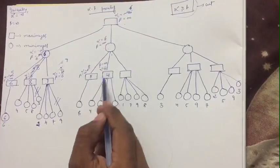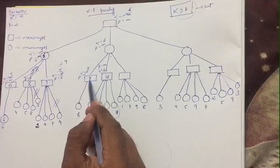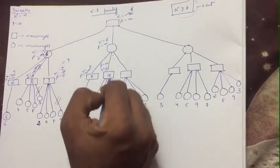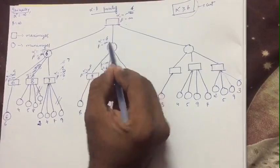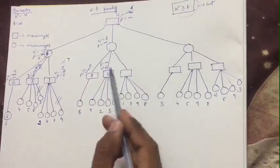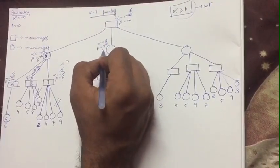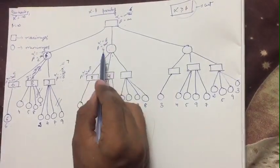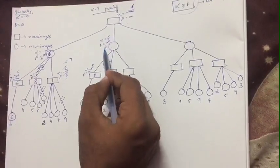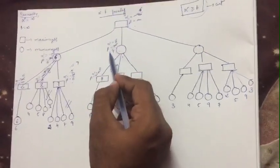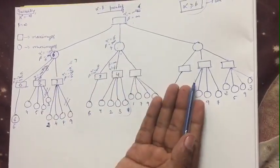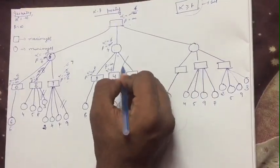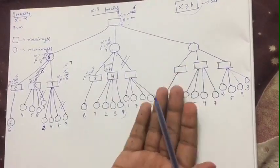At the minimizer node we check which is minimum between 8 and 4: obviously 4. We traverse 4 to the beta value. Beta is infinity, so which is minimum between infinity and 4? It is 4, so cut infinity and write beta equals 4. Now alpha (6) is greater than or equal to beta (4), so we do not traverse the next leaf node and apply a cut.